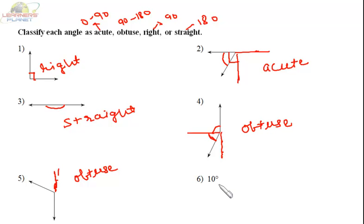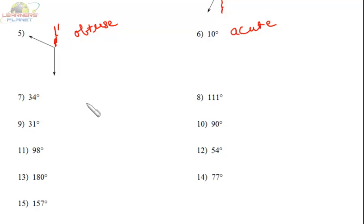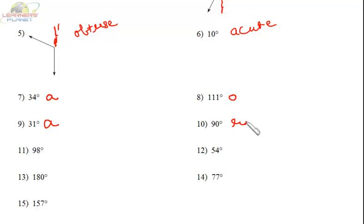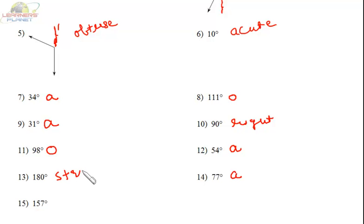Now for specific values: 10 degrees — it's between 0 and 90, so it's acute. 34 degrees — between 0 and 90, so it's acute. 111 degrees — lies between 90 and 180, so it's obtuse. 31 degrees — between 0 and 90, so it's acute. 90 degrees is a right angle. 98 degrees — more than 90 but less than 180, so it's obtuse. 54 degrees is below 90, so it's acute. The next is also acute. Then straight. And the last is more than 90 but below 180, so it's obtuse.